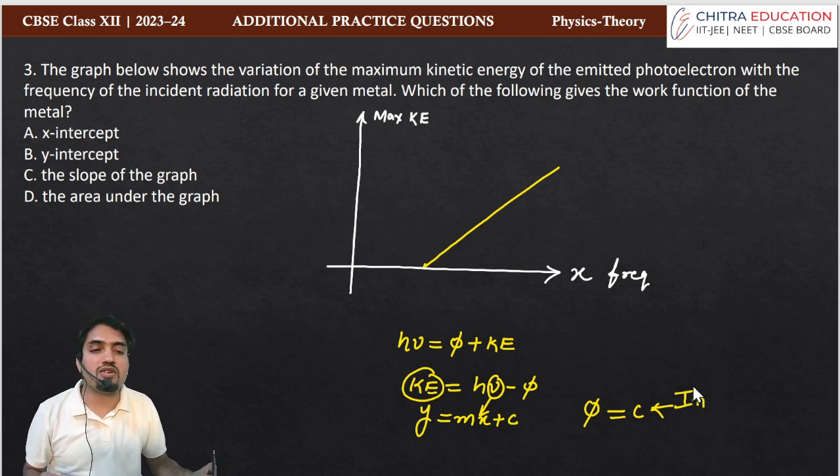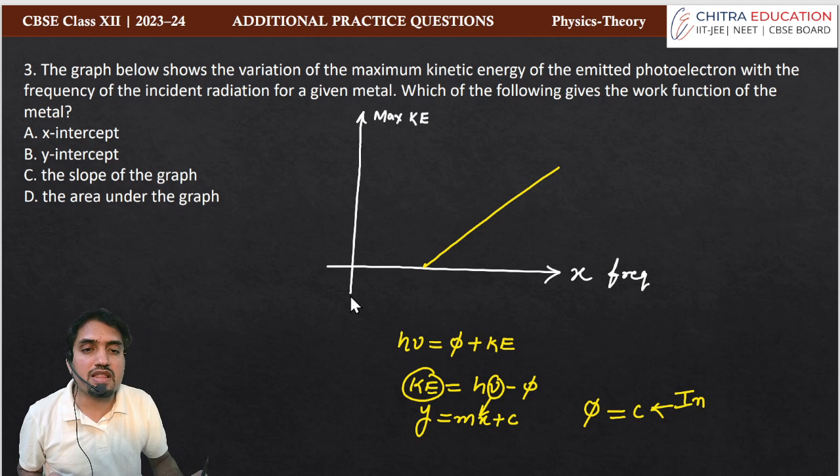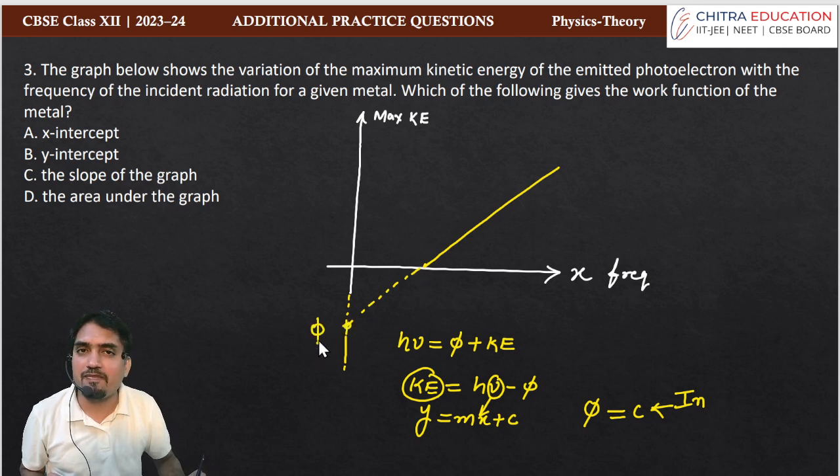y is equal to mx plus c. Intercept on y-axis means that if we extend this axis and extend this straight line, then we will find the work function φ.